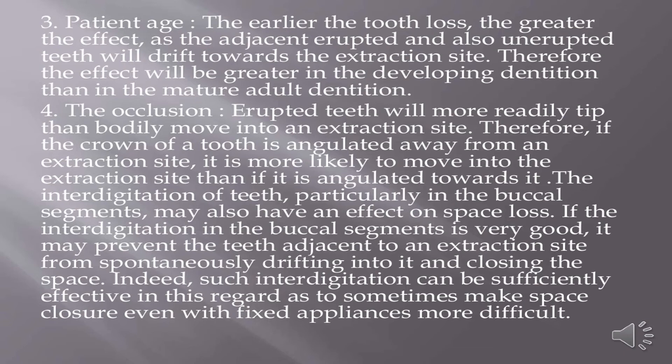Fourth, the occlusion: erupted teeth will more readily tip than bodily move into an extraction site. Therefore, if the crown of a tooth is angulated away from an extraction site, it is more likely to move into it than if angulated towards it. Fifth, the interdigitation of teeth, particularly in the buccal segments, may also affect space loss. If interdigitation in the buccal segments is very good, it may prevent adjacent teeth from spontaneously drifting into an extraction site. Indeed, such interdigitation can sometimes make space closure even with fixed appliances more difficult.